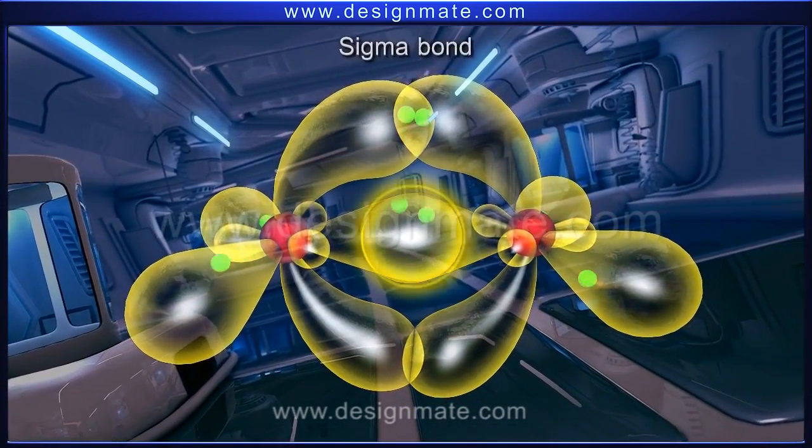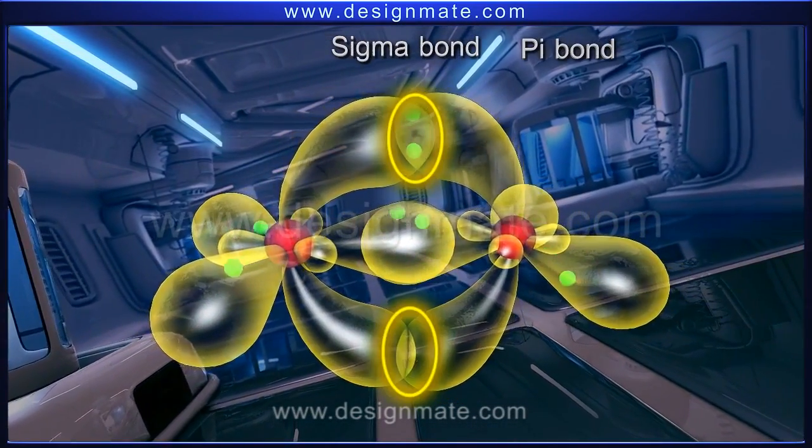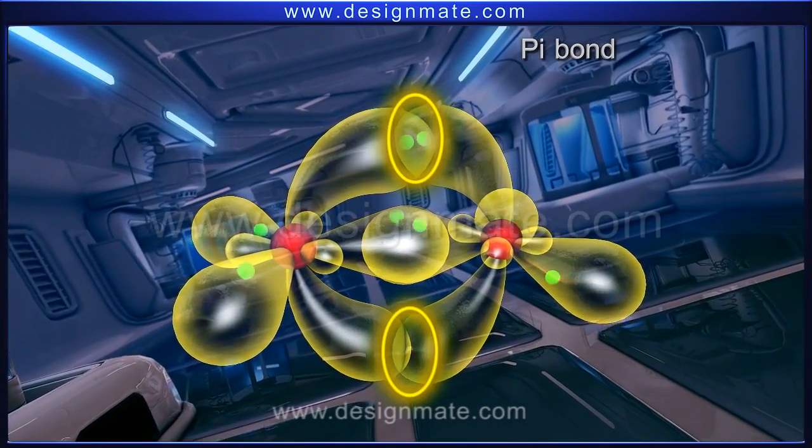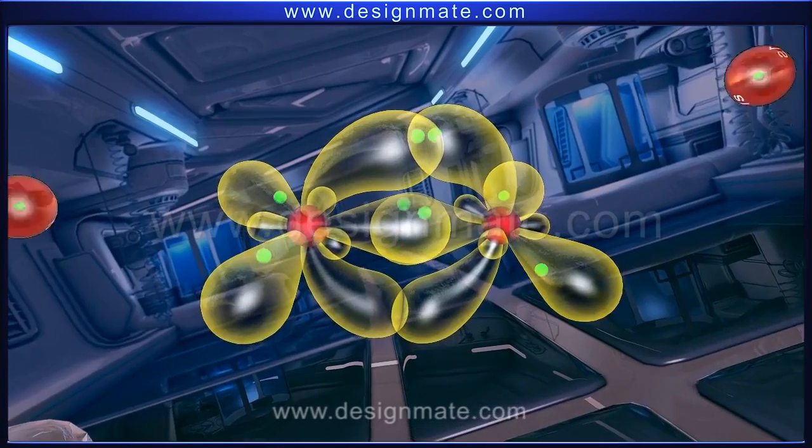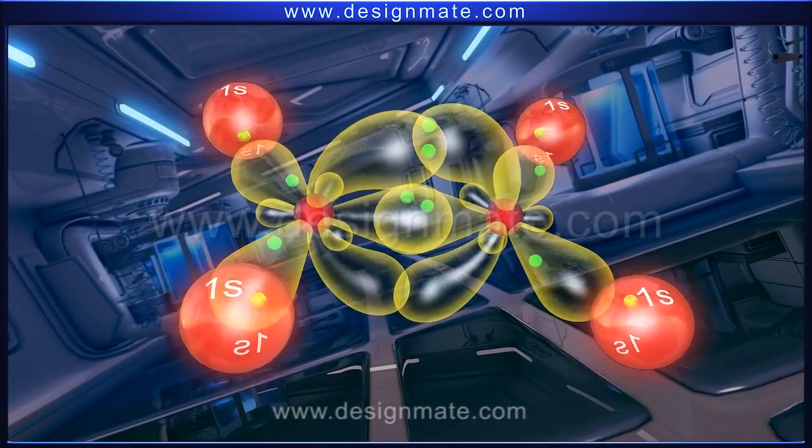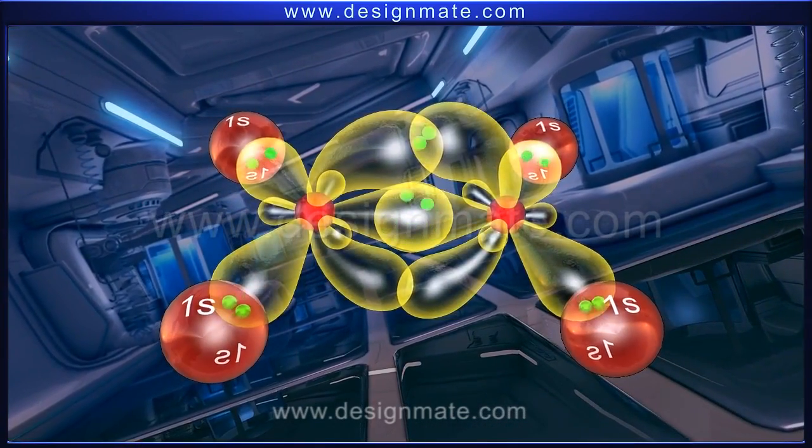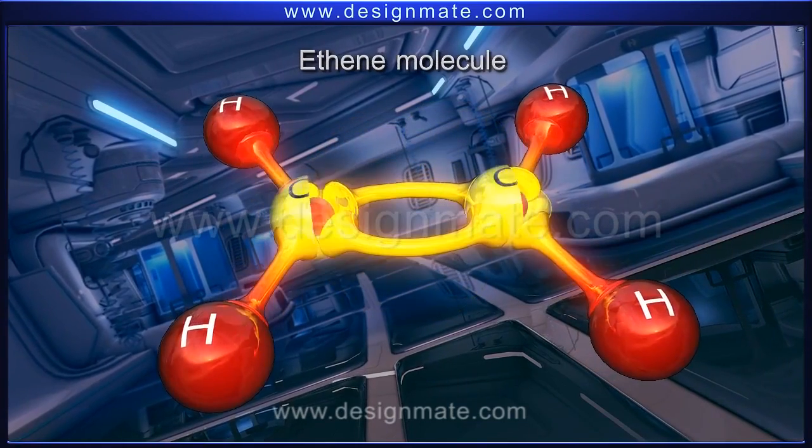Thus, there exists one sigma and one pi bond between the two carbon atoms. The other two valencies of each of the carbon atoms are satisfied by four 1s orbitals of hydrogen, hence forming an ethene molecule.